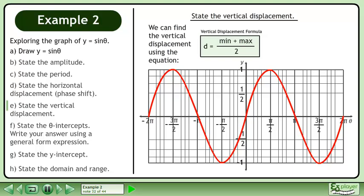We can find the vertical displacement using the equation d equals min plus max over 2. The maximum value of the graph is 1, and the minimum value of the graph is negative 1. Plug the minimum and maximum into the vertical displacement formula. This gives us 0 over 2, which becomes 0. There is no vertical displacement.